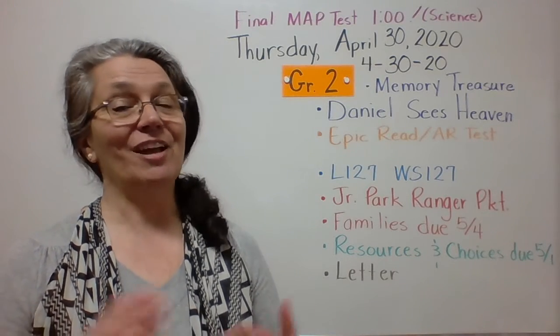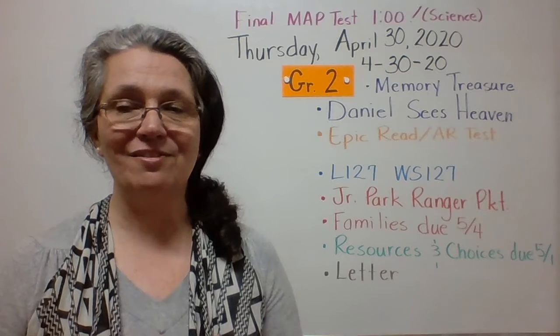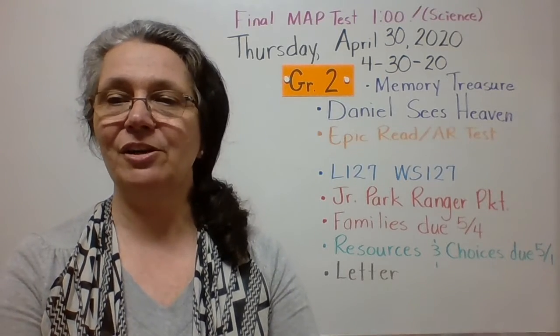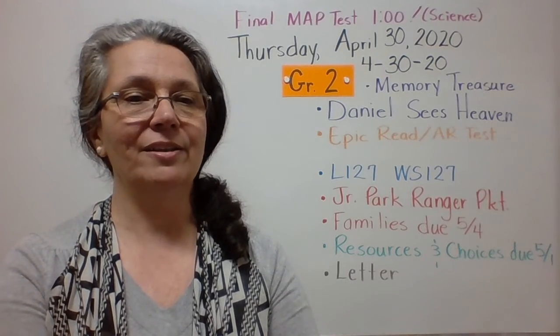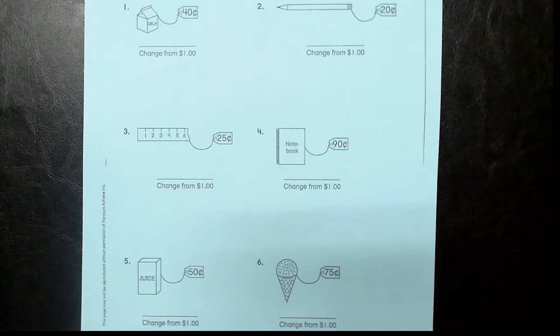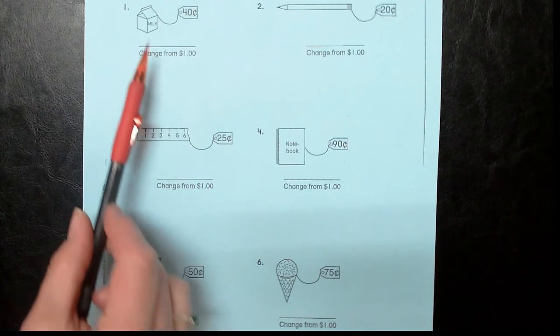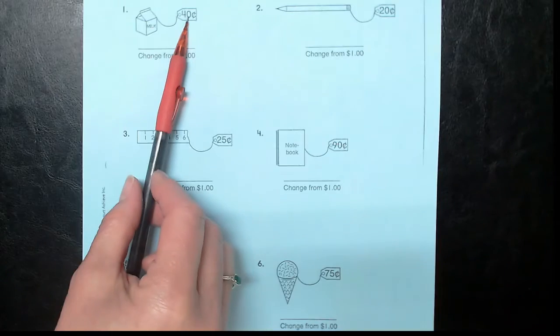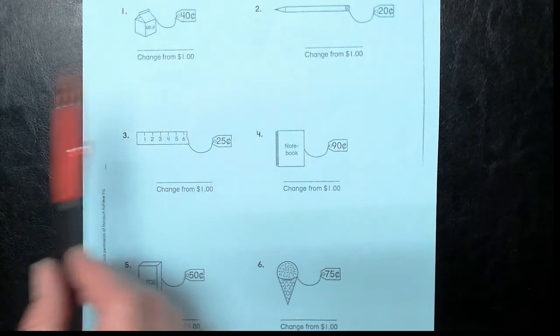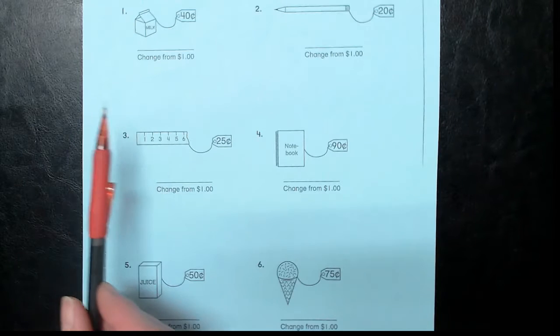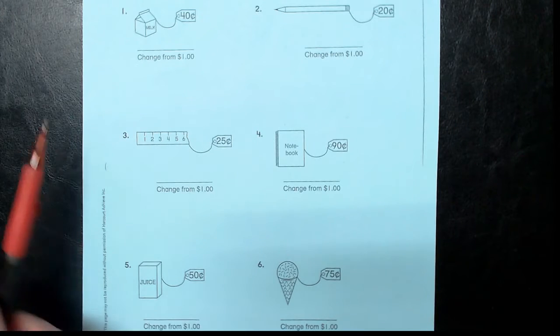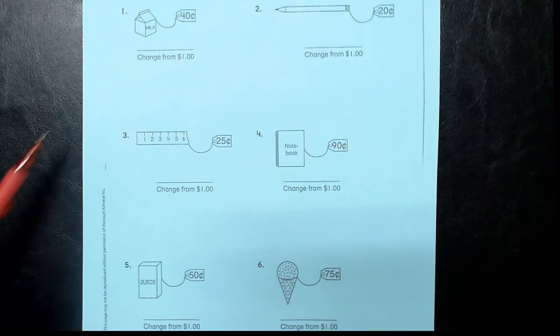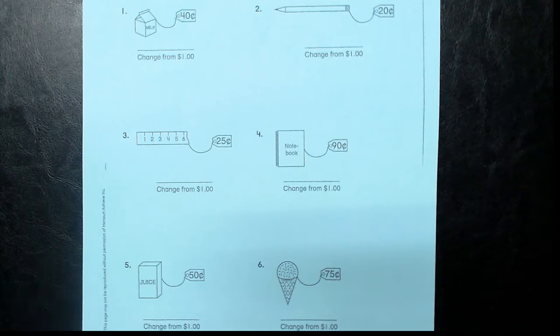All right. Are you ready for some math? Okay. So if you haven't gotten your things yet, pause the video now and then start it again when you're ready to go. I'm going to go to my other camera. We'll see how many hiccups my camera has today. So what we're going to be working on today is talking about if you spend so much money and you give the clerk a dollar, what will you get back in change? And we're also going to talk underneath that, what kind of coins would we get back most likely? What coins would we get back?